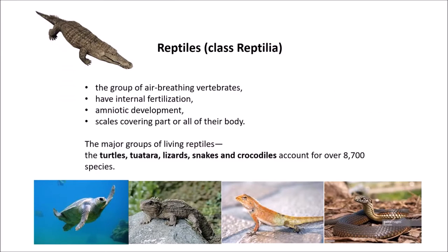Reptiles are the group of air-breathing vertebrates. They have internal fertilization, amniotic development, and scales covering their body. The major groups of living reptiles are the turtles, tuatara, lizards, snakes, and crocodiles, accounting for over 8,700 species.